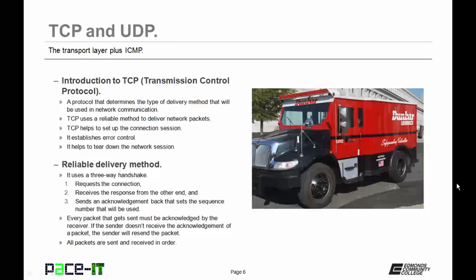The first step of this handshake is the request for the connection. The second step is the reception of the response from the other end. The third part of the three-way handshake is when the requester sends an acknowledgement back that sets the sequence numbers that will be used with every packet that is delivered. Every packet that gets sent must be acknowledged by the receiver. If the sender doesn't receive the acknowledgement of a packet, the sender will then resend that packet. All packets are sent and received in order.